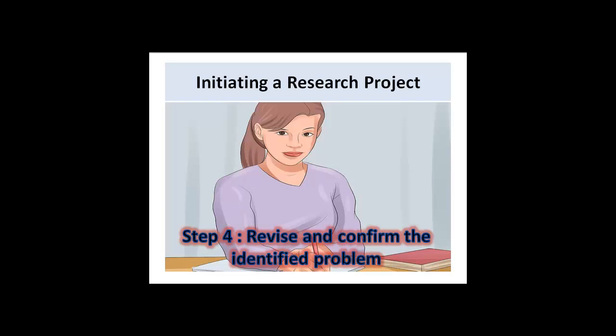Step four is to revise and confirm the identified problem. Make sure your research problem or research questions are clear, specific, and identify the target group of participants. After reading the literature more thoroughly you will likely need to revise your research question to encompass all that you have read. Using your knowledge, make your research questions more specific. This is the fourth step — refining your research question and the identified problem.